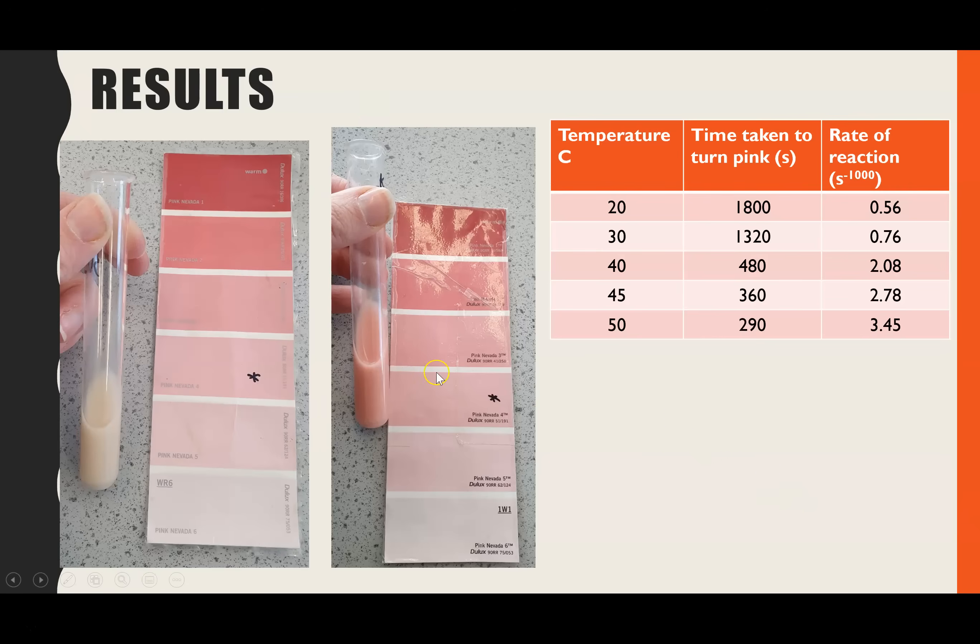The final endpoint, we can see compared to the start color and the end, this is how pink it did go eventually. It would go more pink than that, but I stopped it when it got to pink Nevada 4. That's the color that I was using on that pink paint chart. So that's our endpoint. When the reaction gets to the point that the solution is always that color, that's standardized our method.